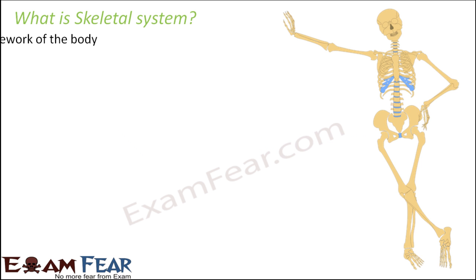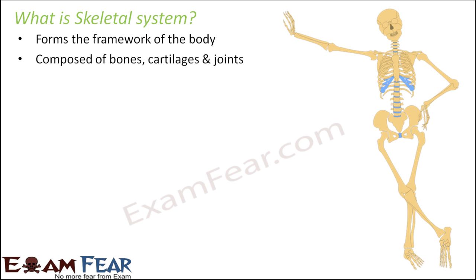So what is the skeletal system? It forms the basic framework of the body — like a rough sketch. First you have this basic framework, and on top of this you have the flesh and the blood and everything else. Without this, our body would not be able to support itself, because the skeletal system is made up of bones, which are strong enough to support the body. It is composed of bones, cartilages, and joints.